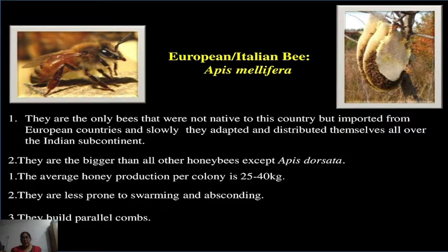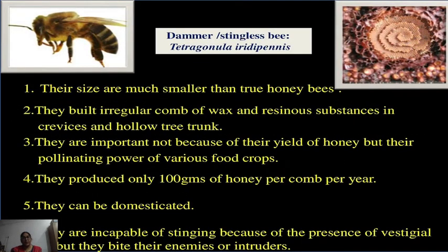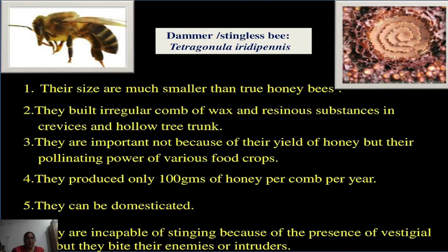Next is the dammer or stingless bee. There are two species: Melipona and Trigona — also called Tetragonula iridipanes. Their size is much smaller than true honey bees. They build an irregular comb of wax and resinous substances in crevices and hollow tree trunks. They are important not because of their honey yield but for their pollinating power for various food crops. They produce only 100 grams of honey per comb per year. They can be domesticated but are incapable of stinging due to a vestigial sting; instead, they bite their enemies.